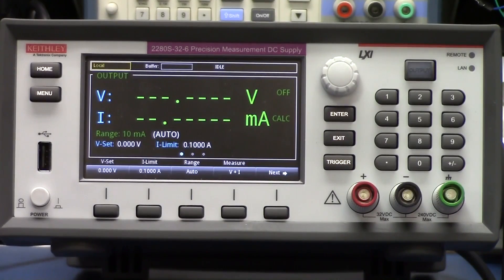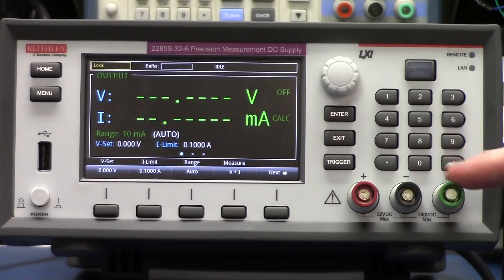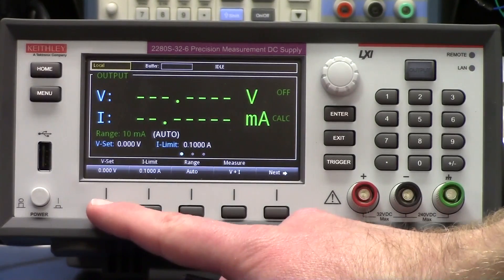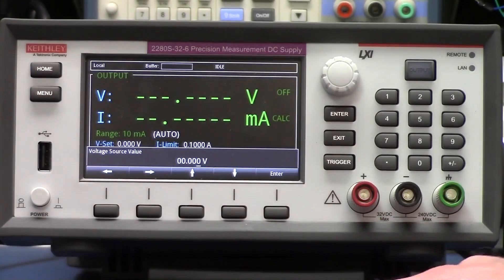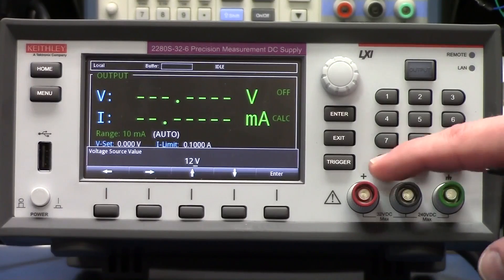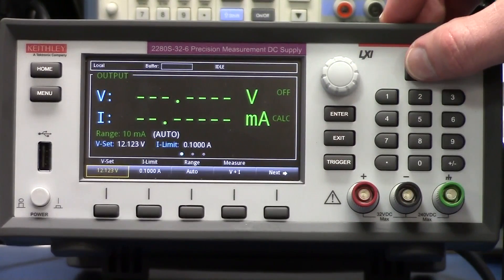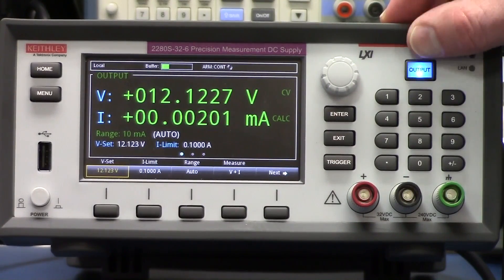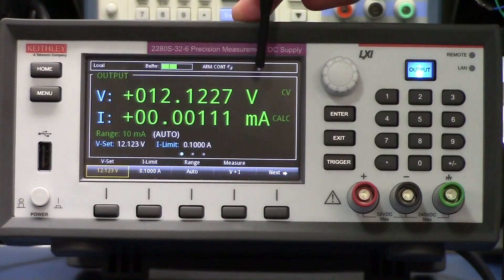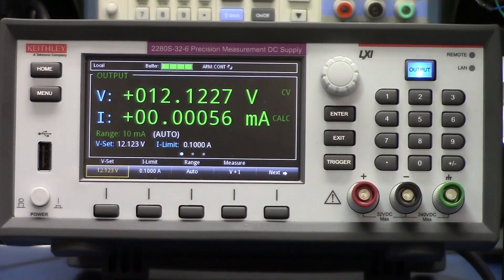This is a really wonderful display. Large digits. Everything's just really impressive. Let's see how easy it is to just set some voltage. So right now, we'll click, we'll hit VSET. We'll type in, I don't know, 12.123. Hit Enter. All right. So we hit the output. The output comes up. I set it to 12.123, and it's reading back 12.1227, so not bad.